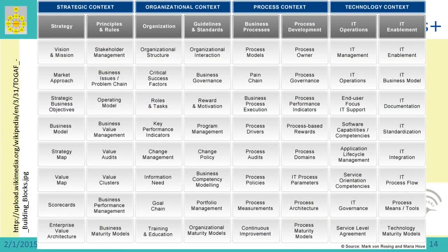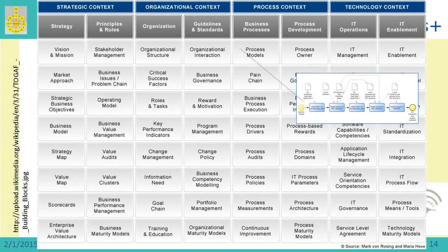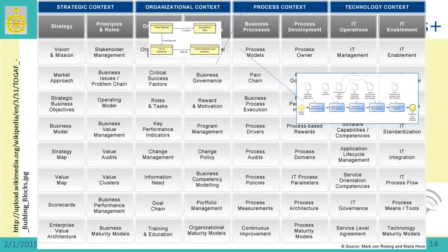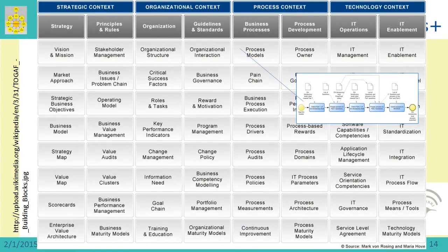Let us place our artifacts within TOGAF. For process models there is a specific place. For the data model, however, there is no clearly stated place at the upper level — it is somewhere in the process context but not explicitly shown. This means the data model will appear somewhere deeper within the architecture framework.